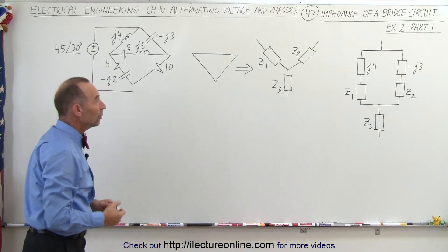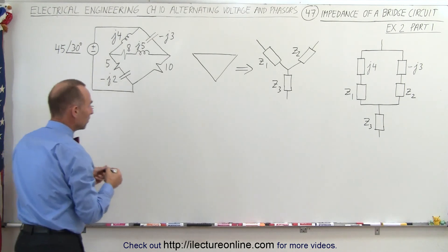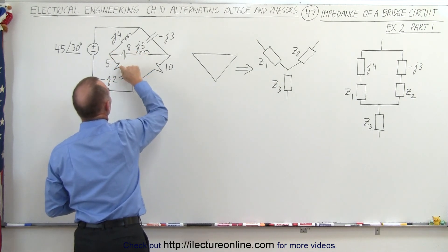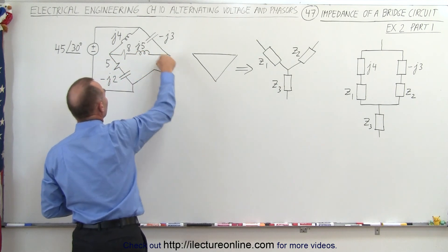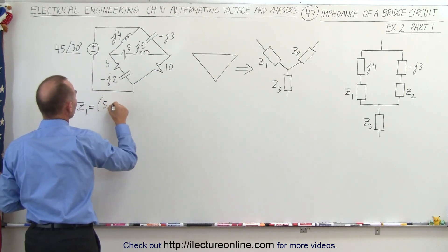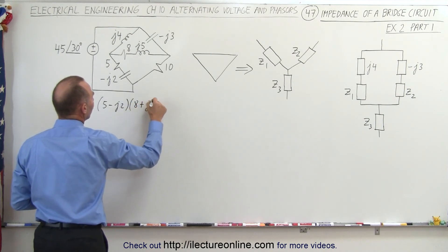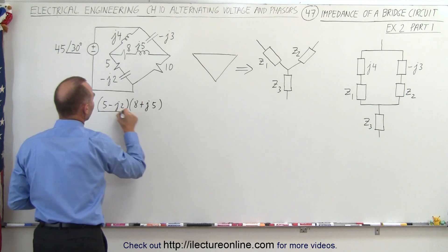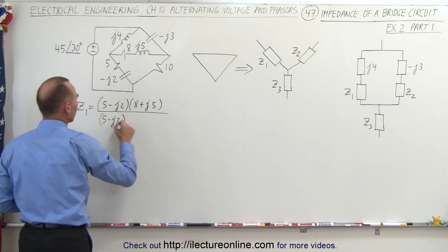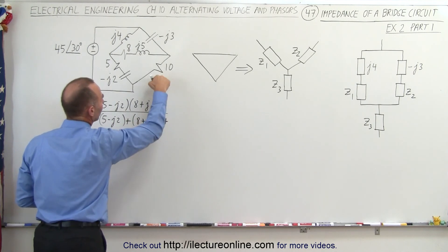So how do we find Z1, Z2, and Z3? Z1 is equal to — notice Z1 will be situated right here, which means we multiply these two branches together and divide by the sum of all three. So we have (5 minus J2) multiplied by (8 plus J5), divided by the sum of all three, which is (5 minus J2) plus (8 plus J5) plus the 10 ohm resistor.